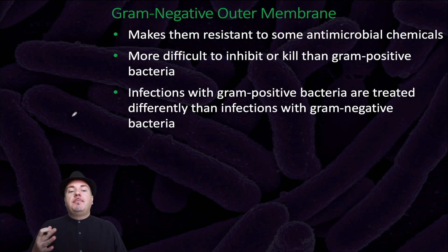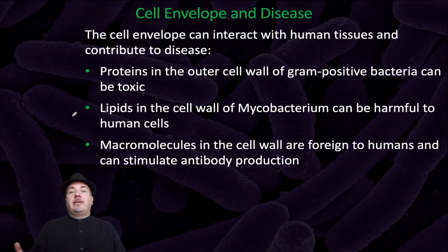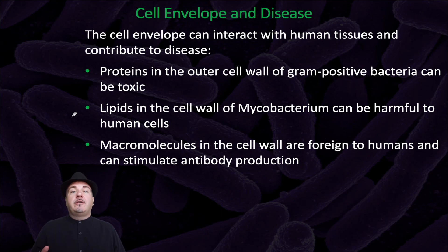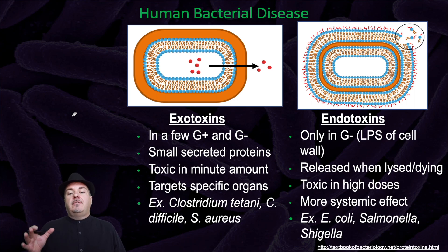The gram-negative outer membrane makes gram-negative bacteria resistant to some antimicrobial chemicals, so they're more difficult to inhibit or kill than gram-positive bacteria. Infections with gram-positive bacteria are treated differently than infections with gram-negative bacteria. The cell envelope of bacteria can interact with human tissues and contribute to disease. For example, proteins in the outer cell wall of gram-positive bacteria can be toxic, lipids in the cell wall of mycobacteria can be harmful to human cells, and macromolecules in the cell wall are foreign to humans and can stimulate antibody production.